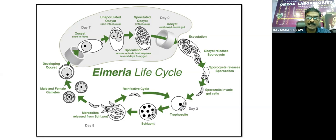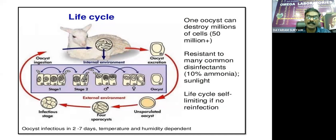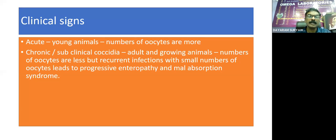Chronic coccidiosis is most dangerous for sheep and goat. Oocysts shed in the feces get sporulated and re-infect sheep and goat, continuing the cycle.